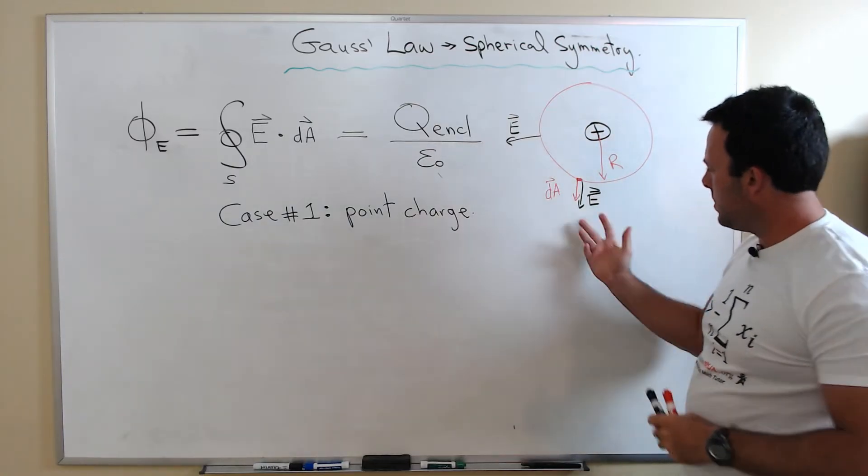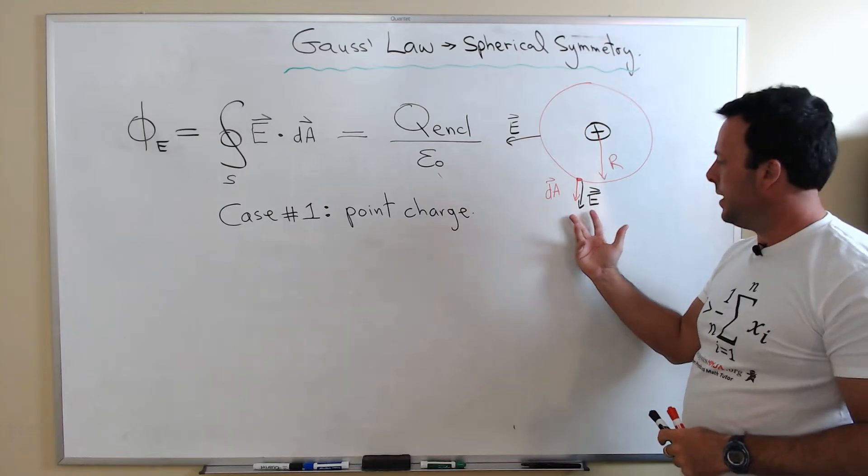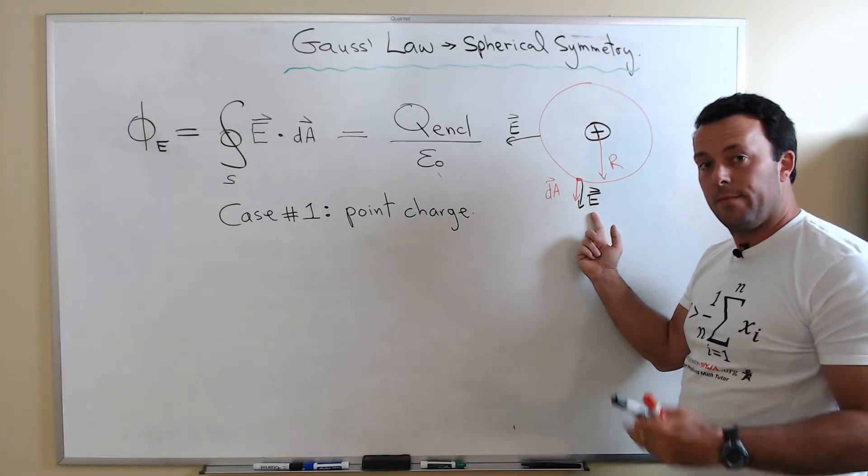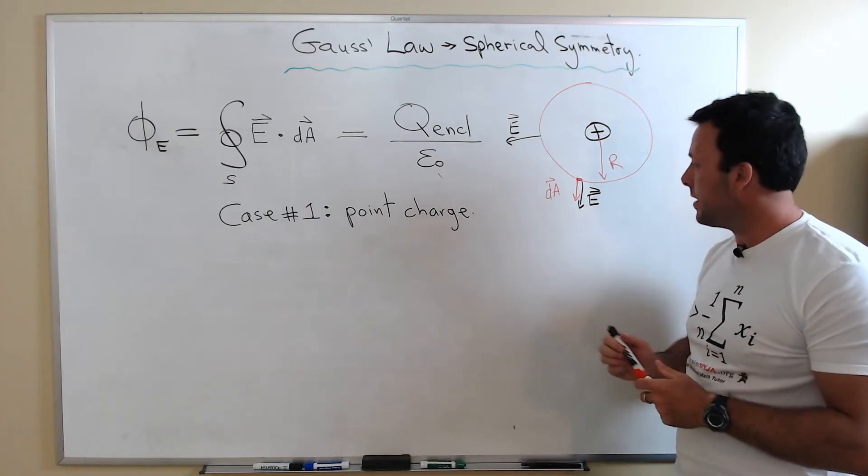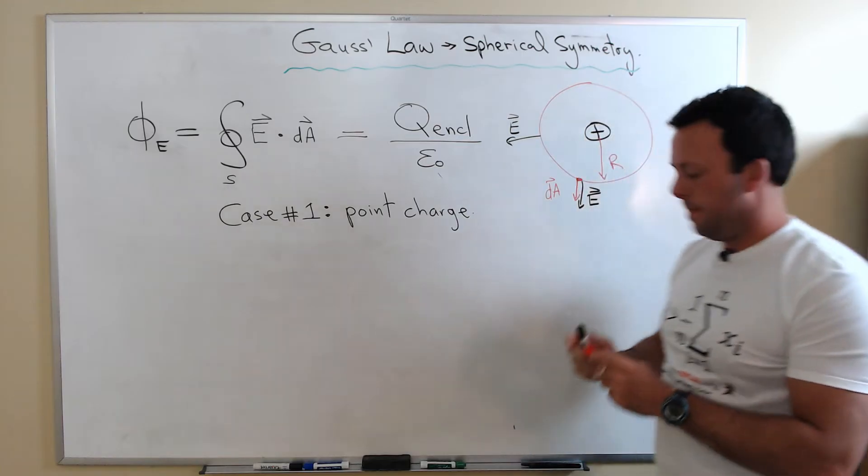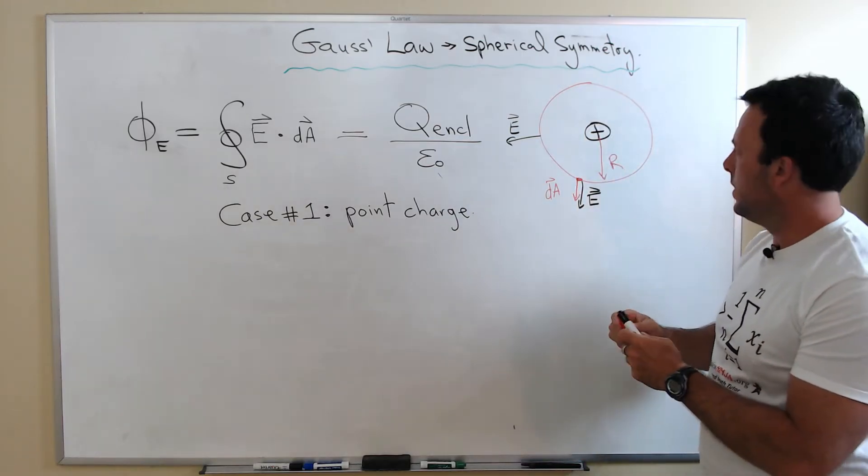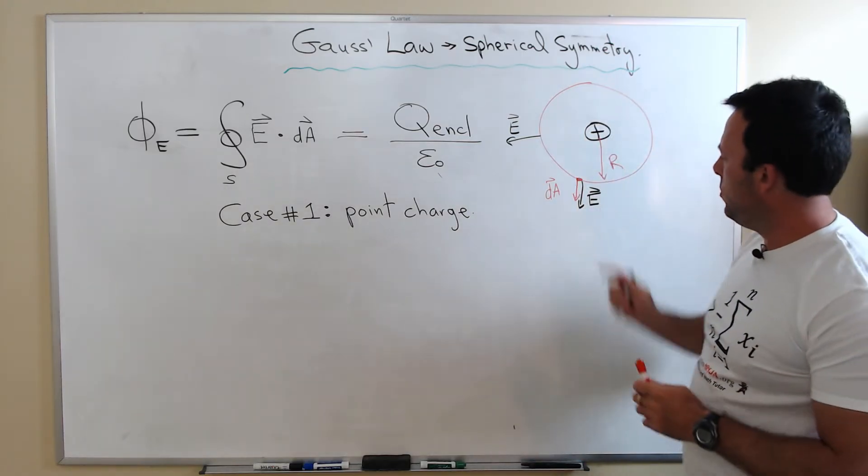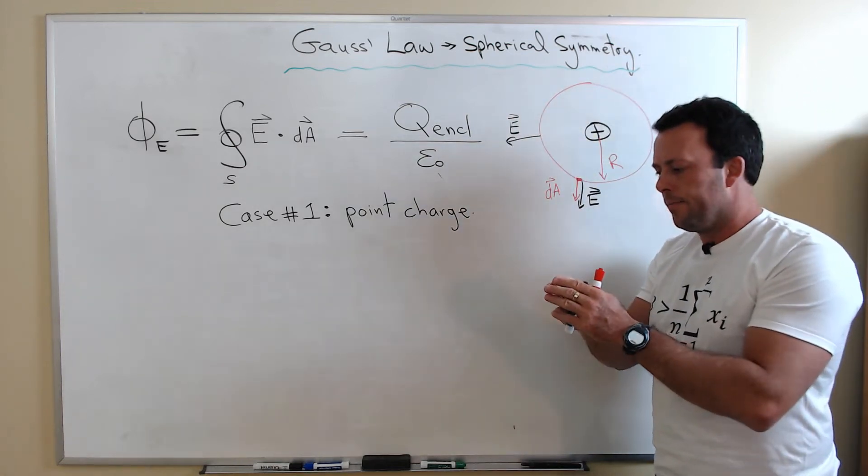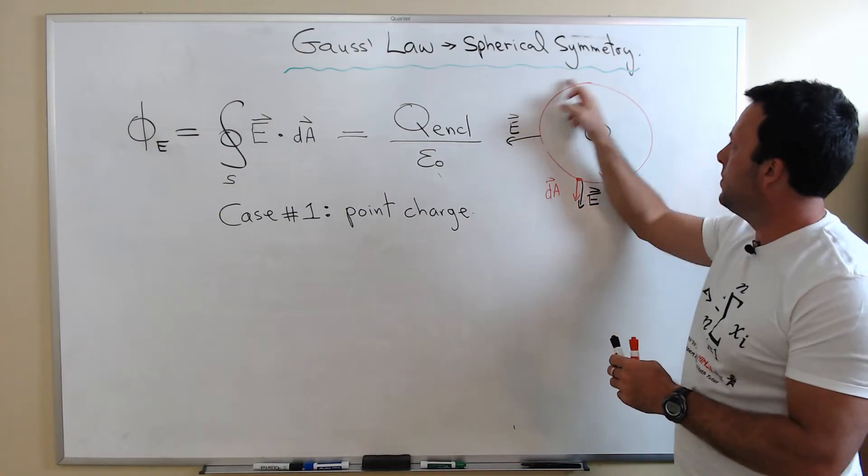So that's one of the simplifications that comes in because that vector da will be parallel to the vector E, or the electric field vector. This expression simplifies. In addition, what you can do - since we also know that the electric field should have the same magnitude everywhere on the surface...